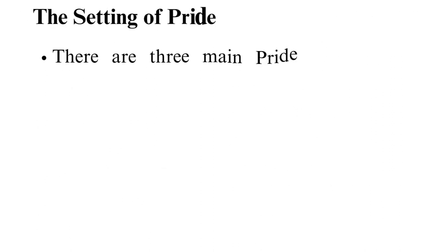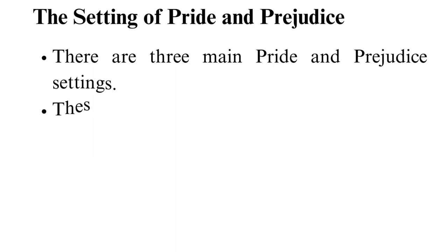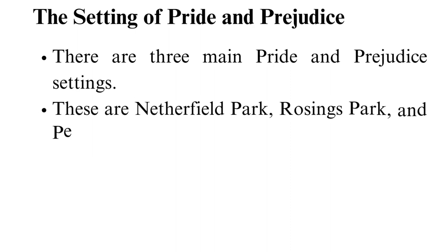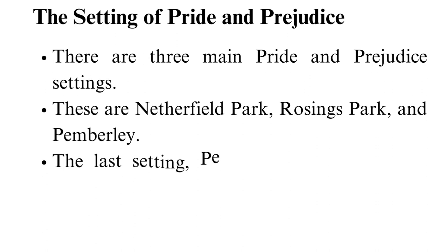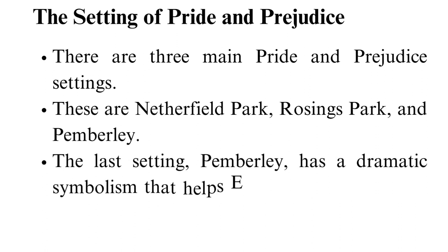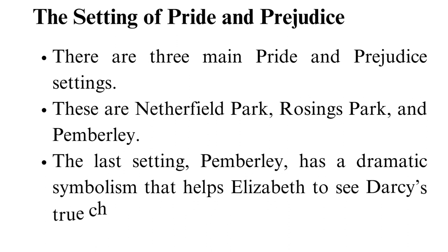There are three main Pride and Prejudice settings: Netherfield Park, Rosings Park, and Pemberley. The last setting, Pemberley, has a dramatic symbolism that helps Elizabeth to see Darcy's true character. All three settings are in England, and events occur in the 1700s and early 1800s. The story builds in Longbourn, where Mr. Bennet's family lives on their estate in rural England. The book pictures a division between those in the rural areas and people in urban estates who were highly regarded, with some undermining the middle class.